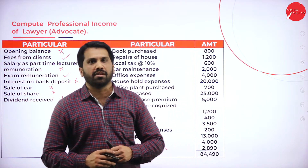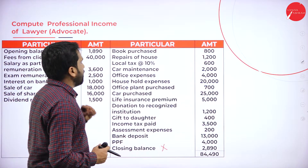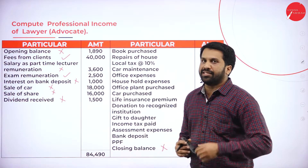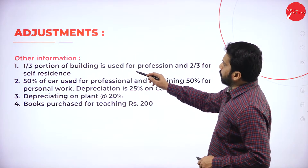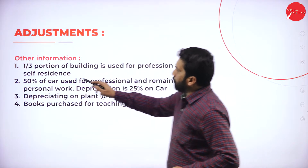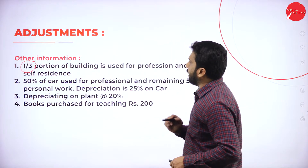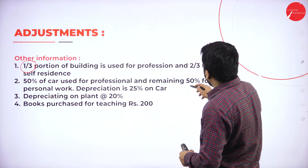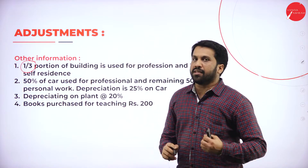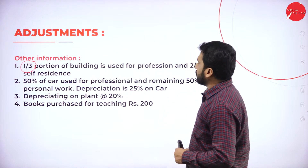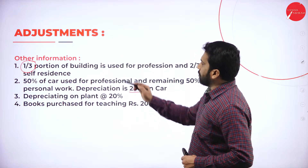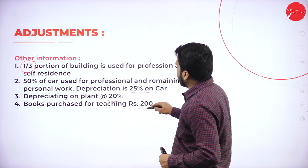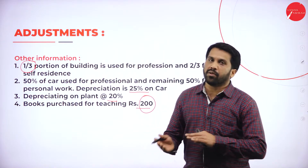We have to identify which are professional income and which are professional expenditure. Professional expenditure items include books and others. Before that, we go to your adjustments. One third portion of the building is used for profession, so we should consider only one-third. 50% of the car is used for profession and 50% for personal work. Depreciation on car is 25%. Depreciation on plant is 20%. Books purchased for teaching purpose are Rs.200 — we don't want teaching, we want only profession.